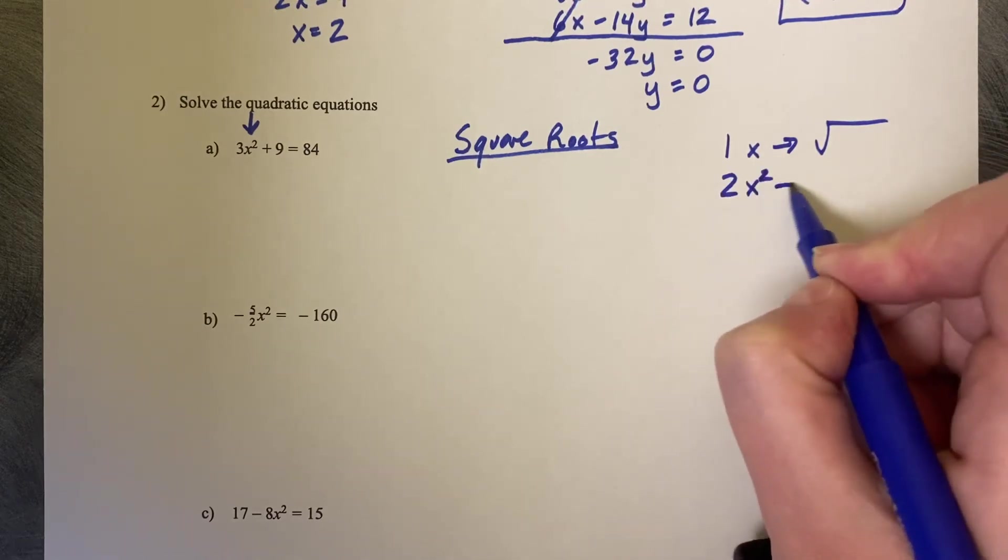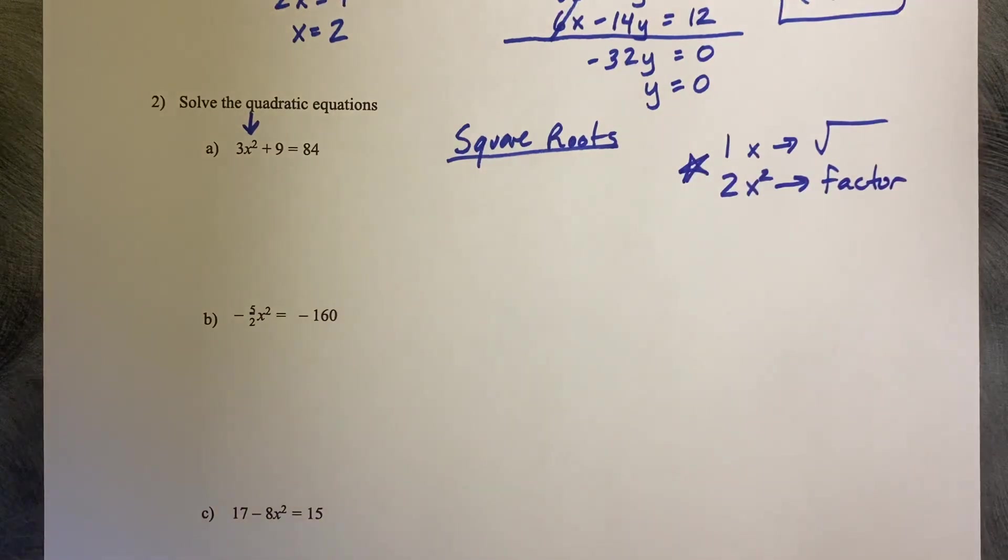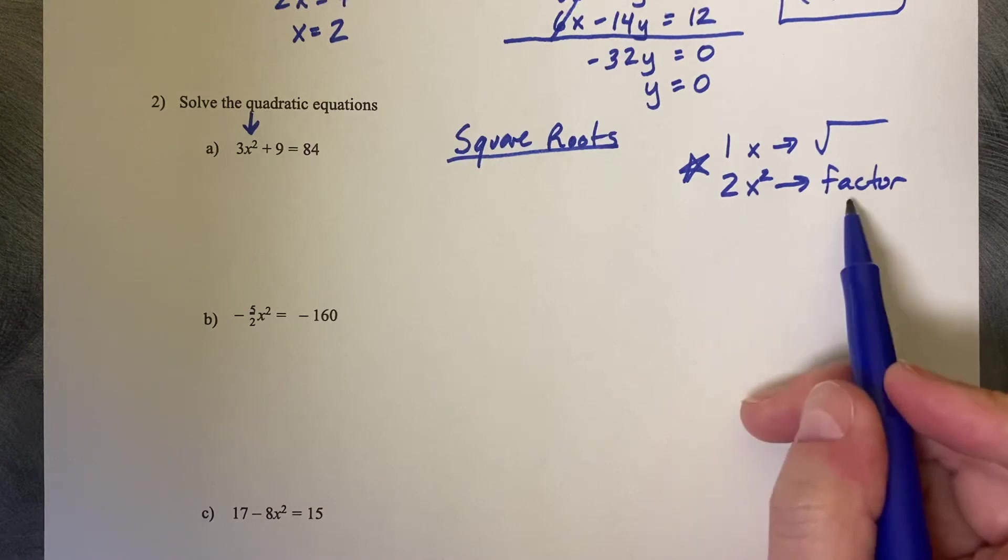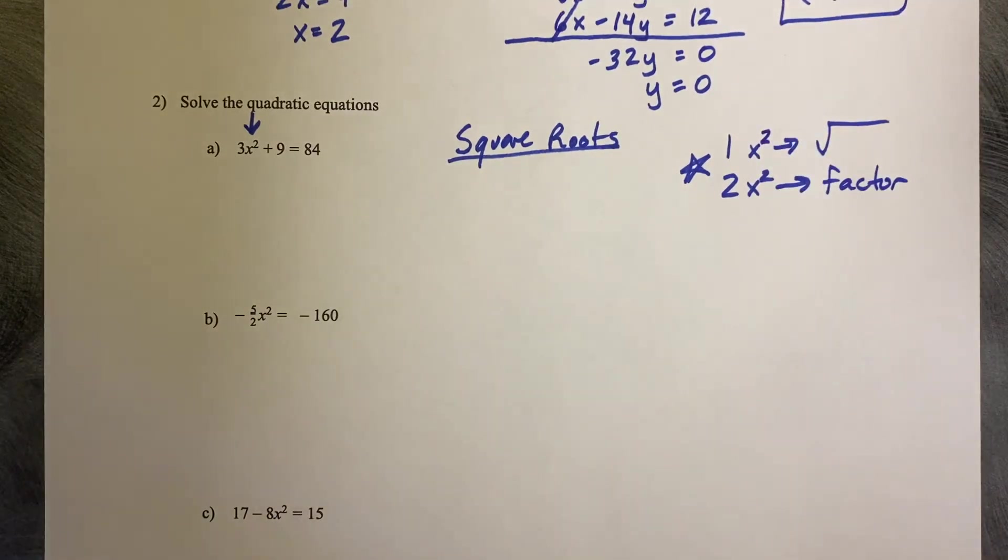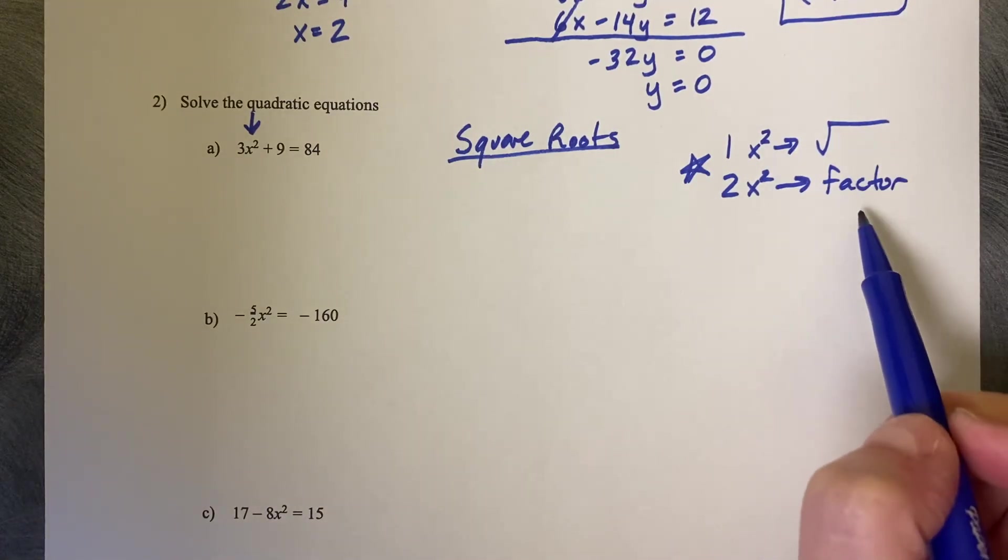So 1x, you can use square roots. 2 x's, you must factor. This is key. If you've got one x value, you can use square roots. If you've got two x's, then you must factor. If you've got one x squared, I should say. If you have one x squared, then you can use square roots. If you have two x squared, you can factor. So for example, a two x squared one would look like this: two x squared plus four x plus seven. You need to factor that. You can't use square roots.